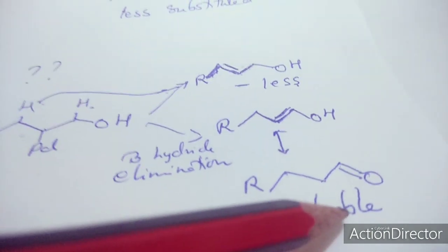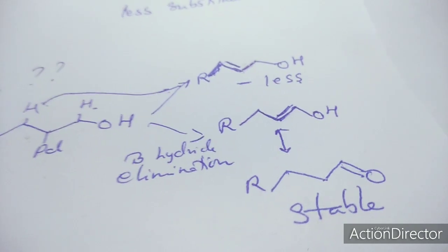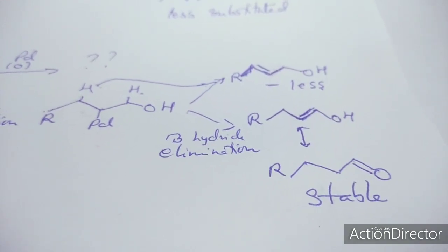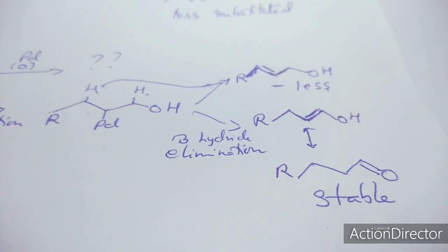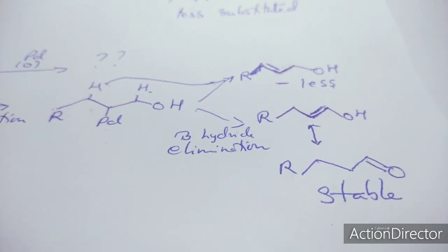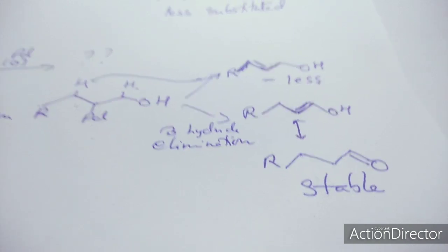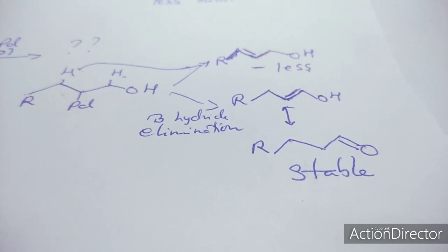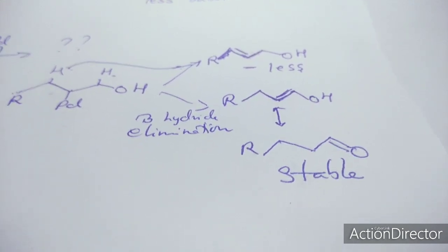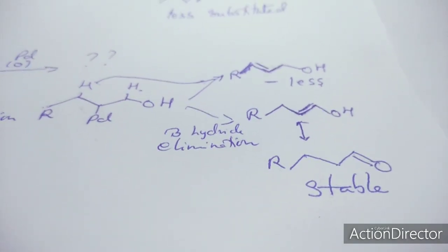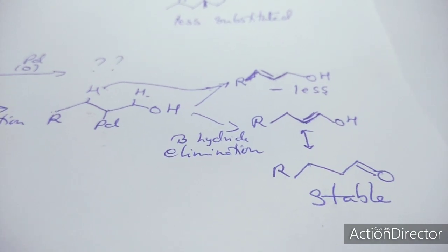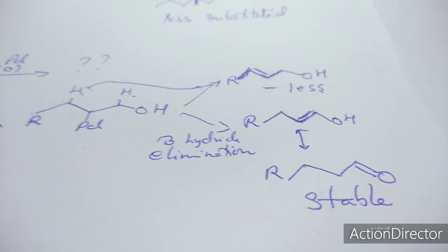Therefore the major product is the ketone, formed by enol tautomerization. This was an interesting reaction because two products could potentially form, but the ketone is favored due to the greater stability of the C=O bond over C=C. I hope the mechanisms and stereochemical reasoning for these cross-coupling reaction problems are now clear. Good day to all.